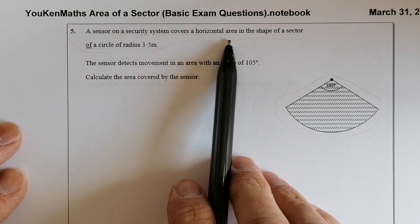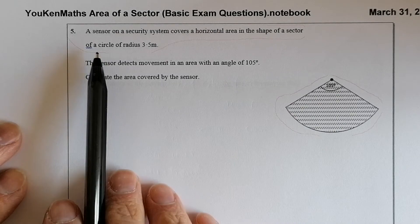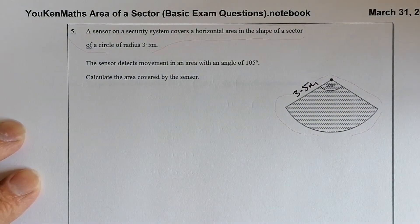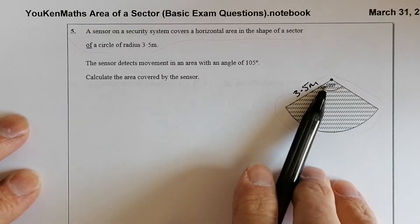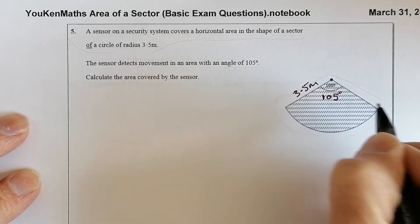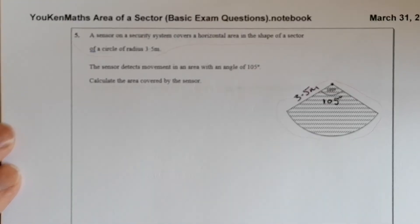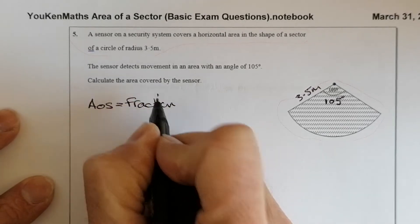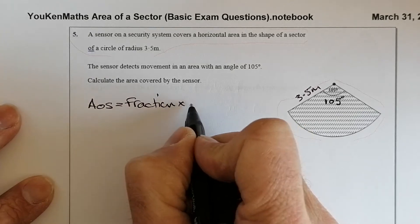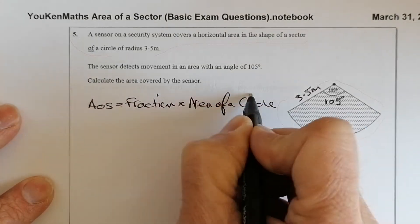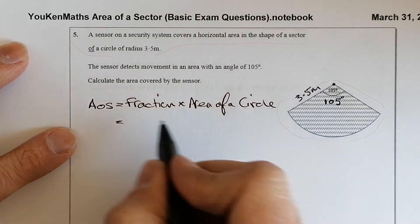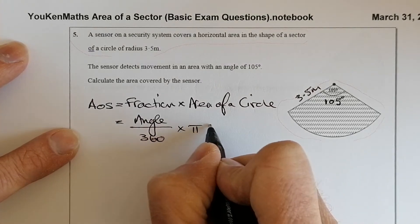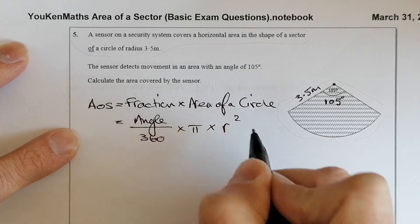A sensor on a security system covers the horizontal area in the shape of a sector. The radius of the circle is 3.5 metres. The sensor detects movement in the area with an angle of 105 degrees. Calculate the area covered by the sensor. The area of the sector equals whatever fraction of the circle I'm interested in, times the area of a circle. The fraction is the angle at the centre over 360, multiplied by pi, multiplied by the radius squared.